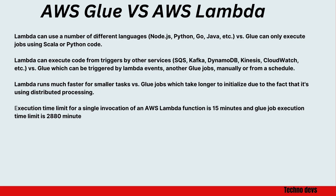Lambda can execute code triggered by other services — SQS, Kafka, DynamoDB, Kinesis, CloudWatch, etc. — versus Glue, which can be triggered by Lambda events, another Glue job, manually, or from a schedule. Lambda runs much faster for smaller tasks, versus Glue jobs which take longer to initialize due to the fact that it uses distributed processing.